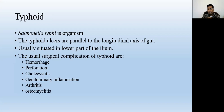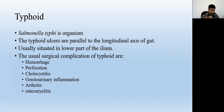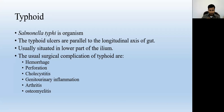These ulcers are usually situated in the lower part of the ileum. Along with other symptoms like nausea, vomiting, abdominal pain, and high-grade fever, the surgical complications associated with typhoid include hemorrhage, perforation, cholecystitis, genitourinary inflammation, arthritis, and osteomyelitis. These are surgical conditions that can be present with typhoid infection.